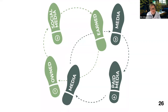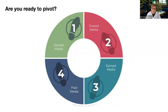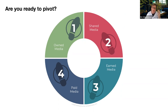To recap: in a digital pivot, owned media is the first step, shared or social is the second step, earned media is the third step, and once those channels are optimized, you can use paid media to increase transactions more predictably. This is the choreography for executing a digital pivot — owned, shared, earned, and paid. The secret is the sequence.